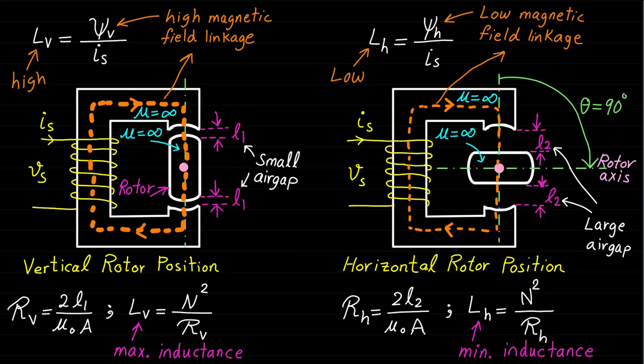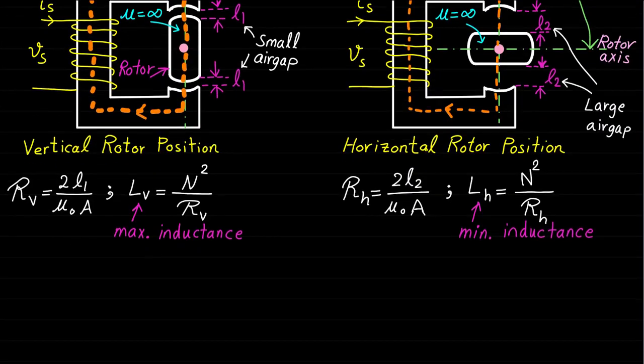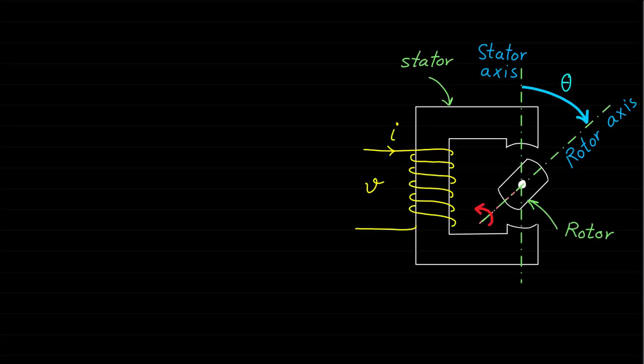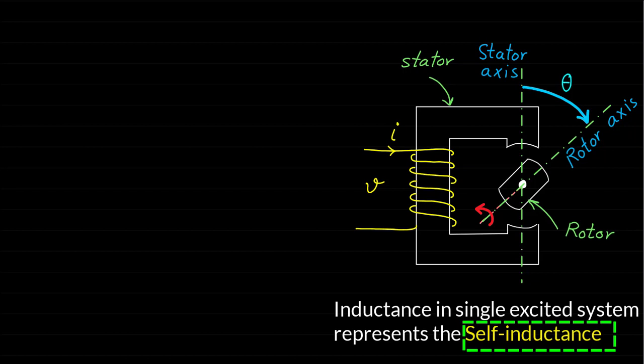So now we know that this system is able to develop torque because the inductance changes with respect to the rotor angle theta. At this point, we are not expecting continuous rotation for such a system. However, this single excited system will generate some movement and then stop.